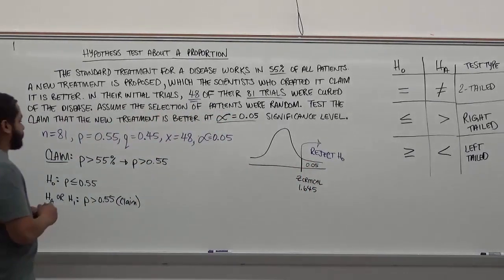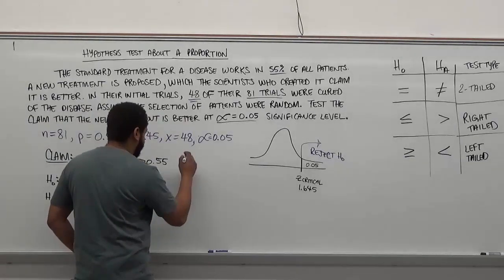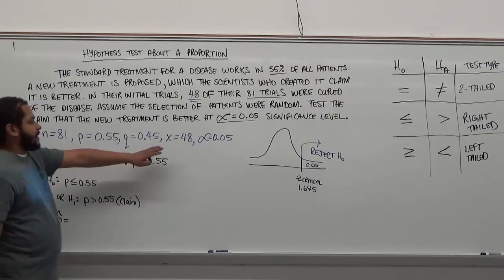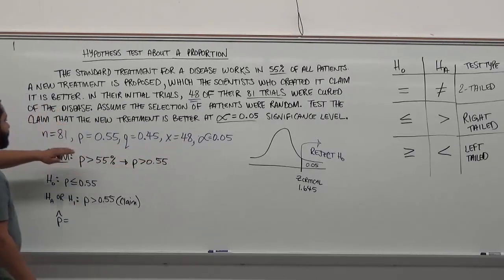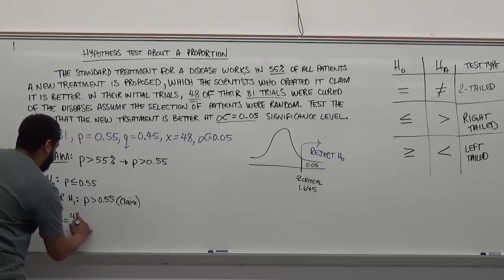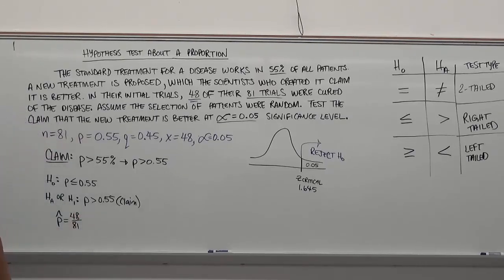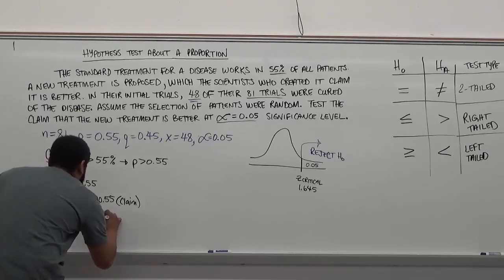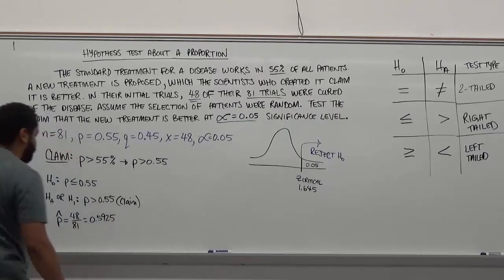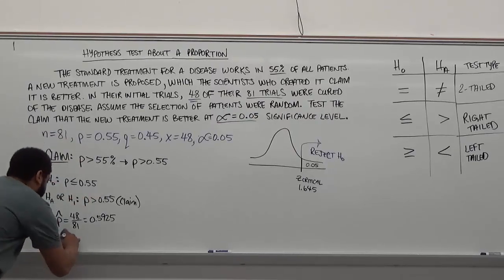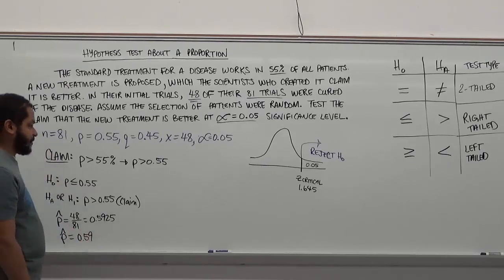Now we need to calculate p-hat, our point estimate. To get p-hat, we take x — the successful trials — and divide by the total number of trials: 48 divided by 81 equals 0.5925. Rounding to two decimal places, our p-hat is 0.59.